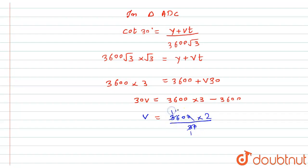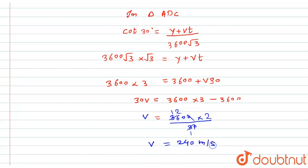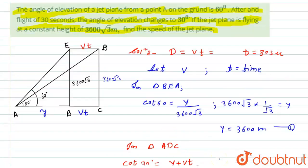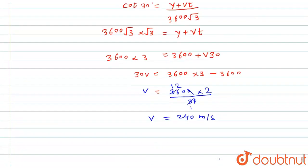Simplifying: 3600 × 2 divided by 30 gives 240. So the speed of the jet plane is 240 meters per second. The unit for velocity is meters per second, and that is the answer to the question.